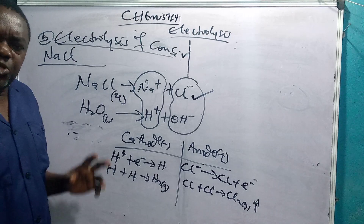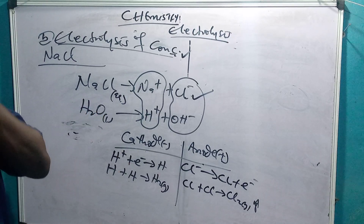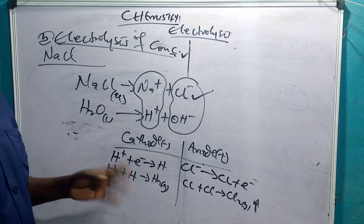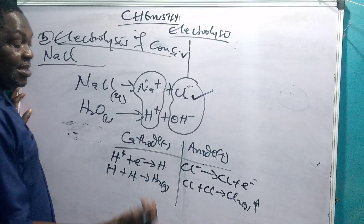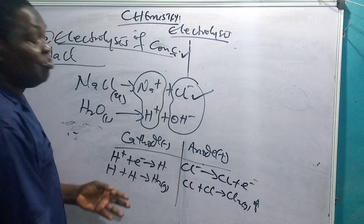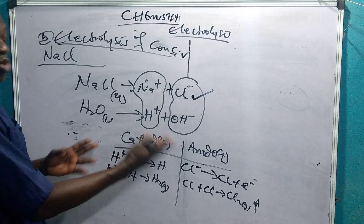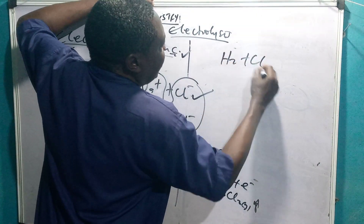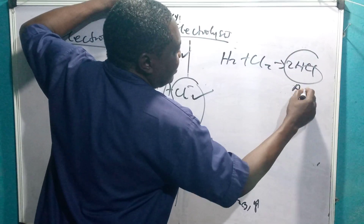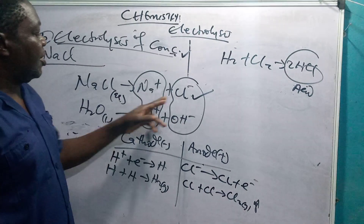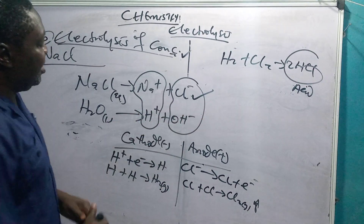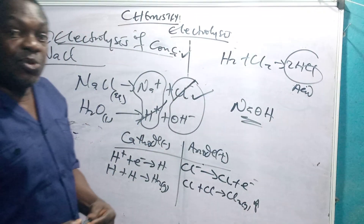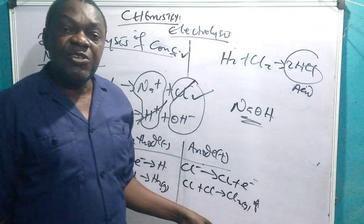Now this is where some exam questions can come up — in WAEC, NAPTEC, or whichever exam. They will ask intelligent questions to see if you truly understand the topic. You have said that at the cathode you have hydrogen and at the anode you have chlorine. H₂ plus Cl₂ gives you 2HCl — meaning an acid is being produced. Since chloride and hydrogen are removed from the sodium chloride solution, the remaining solution is sodium hydroxide.